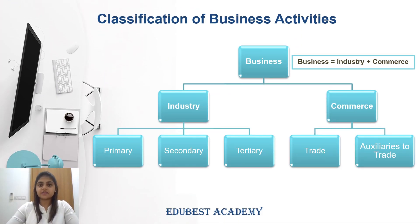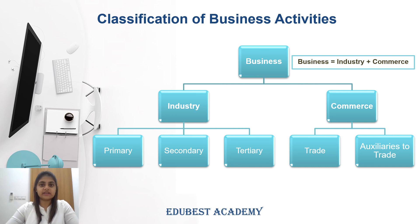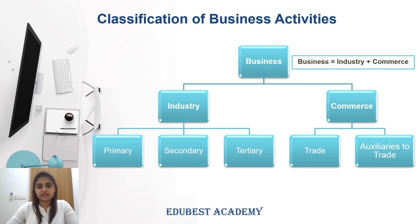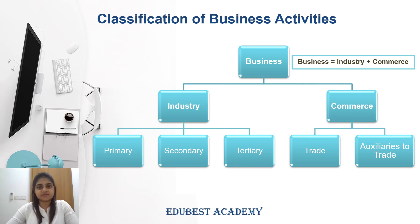Business activities are divided into two parts: industry and commerce. Further, industry has three parts — primary industry, secondary industry, and tertiary industry. Commerce has two parts: trade and auxiliaries to trade. There are many further sub-parts of each which we will read in the next slides.